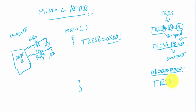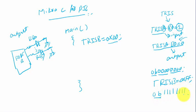To initialize Port B as input instead, we write TRISB = 0xFF. In binary, 0xFF equals 0b11111111, meaning all 8 bits are set to 1. Setting all bits to 1 configures all pins as input. So TRISB = 0x00 sets all pins as output, and TRISB = 0xFF sets all pins as input.